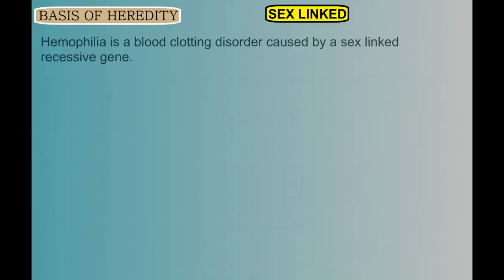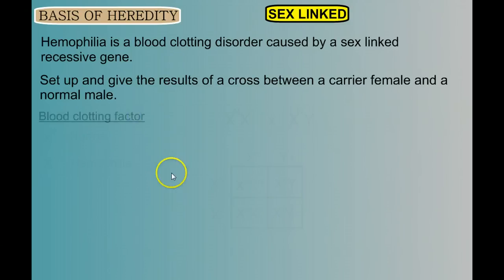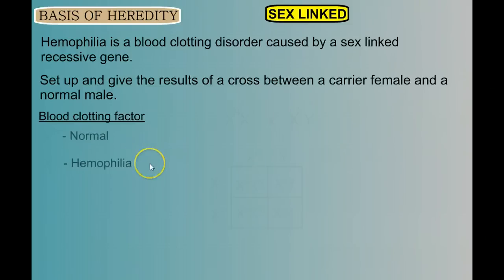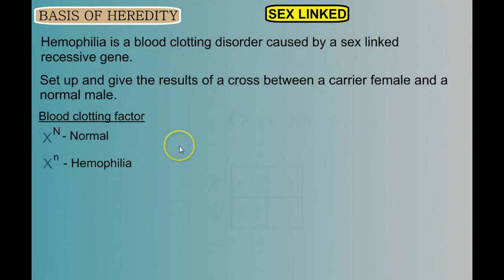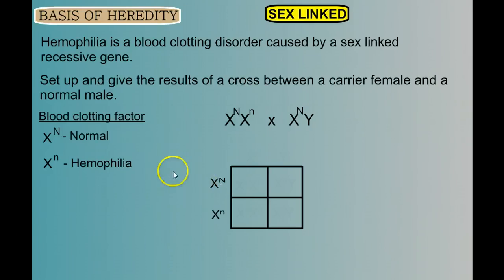Now I'm going to challenge you. Hemophilia is a blood clotting disorder caused by a sex-linked recessive trait. Set up and give the results of a cross between a carrier female and a normal male — pause the video, get out a piece of paper, and solve this problem. The trait is blood clotting factor. Normal is dominant and hemophilia is recessive, so we give normal a big N and hemophilia a little n, and since it's sex-linked, these genes are on an X chromosome. The female is a carrier, meaning she has the gene but doesn't express it, so she's heterozygous. The male is normal, so he has a big N. Build your Punnett square with the mom on one side and the dad across the top to get your results.